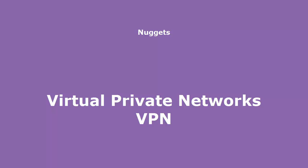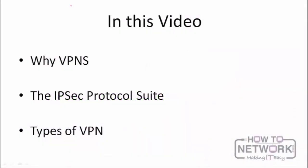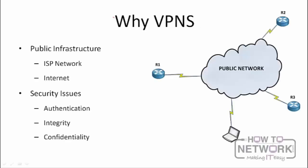In this video we will be looking at virtual private networks. We're going to look at why we need VPNs, the IPSec protocol suite, and types of VPNs in Cisco networks. A VPN is a virtual private network — a private network that runs over a public infrastructure, which can be the ISP network or the internet. The public infrastructure is any infrastructure that you pay for but do not own.